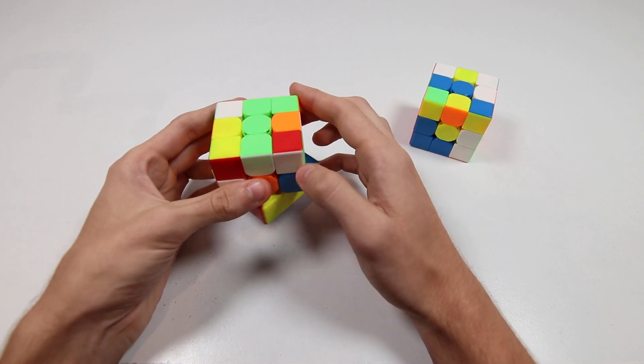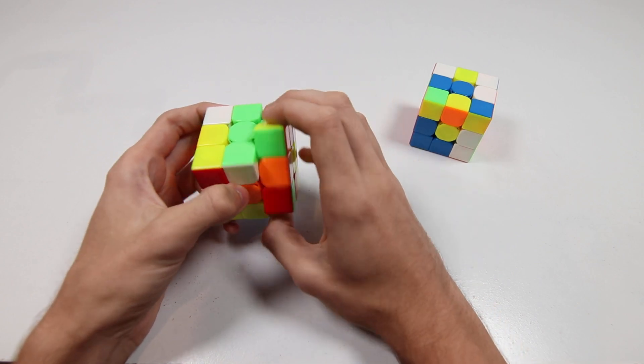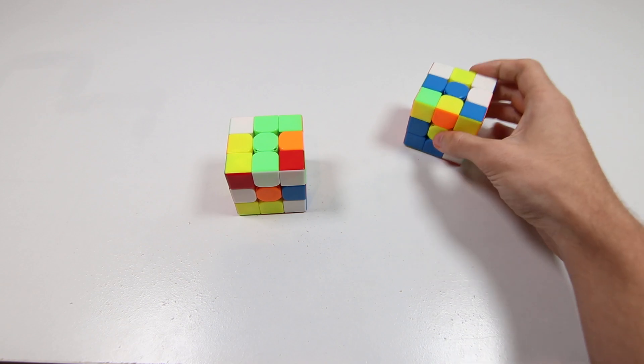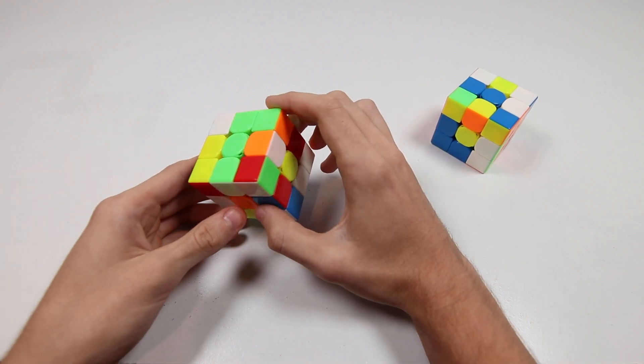The second step is you want the XX cross to be a D2 away from solved, kind of like that. And then the last thing you need to account for, and sometimes you won't even be able to do this, which is why we have the second option here.